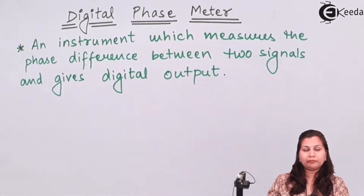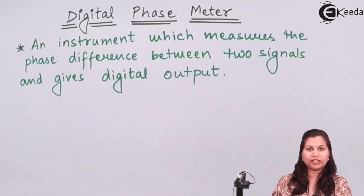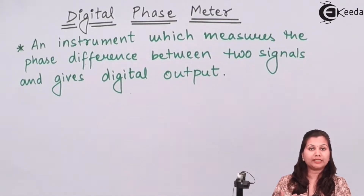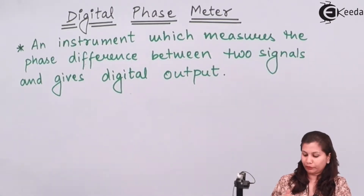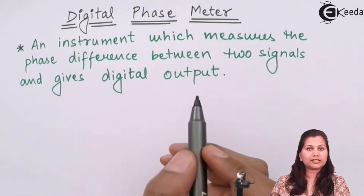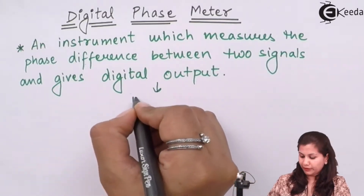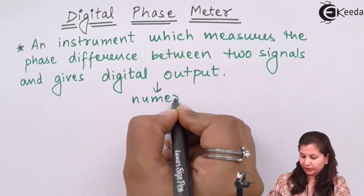Digital output means that the instrument is going to give us the numerical value of the phase difference. If we are getting the output in numbers, that means it is a digital output. If we are getting the values in the form of a waveform or a continuous signal, that will be an analog output. So this Digital Phase Meter presents the phase difference as a numerical value.